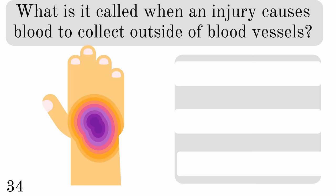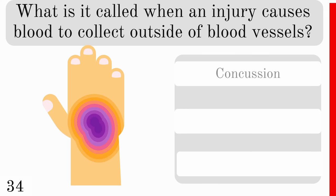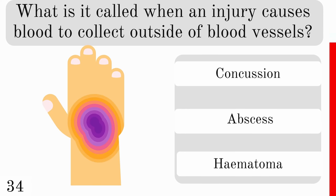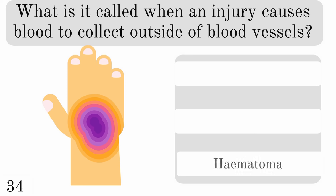What is it called when an injury causes blood to clot outside of blood vessels? Is it a concussion, an abscess or a hematoma? And the correct answer is hematoma.